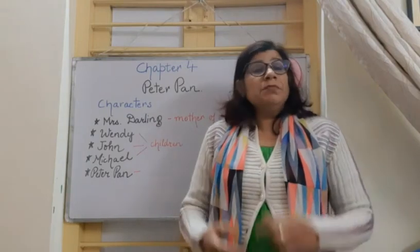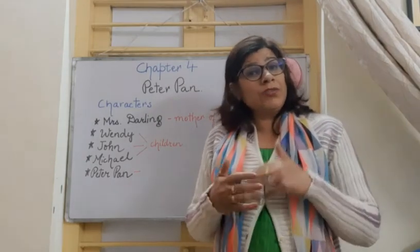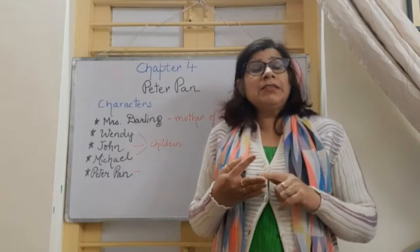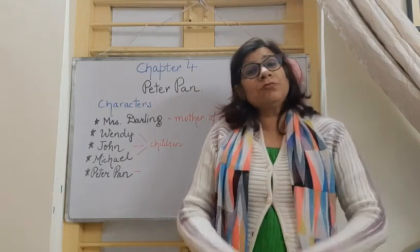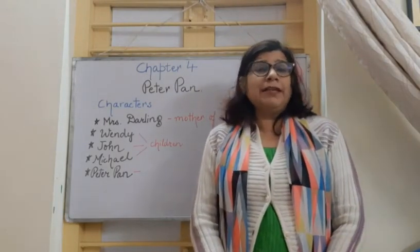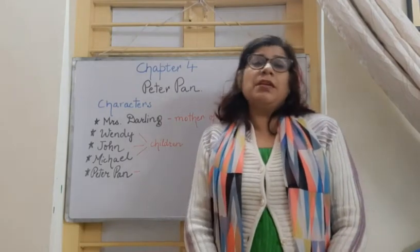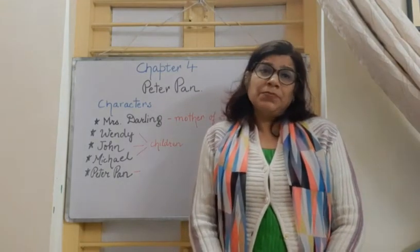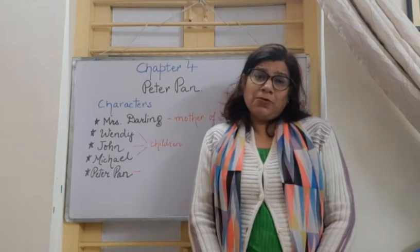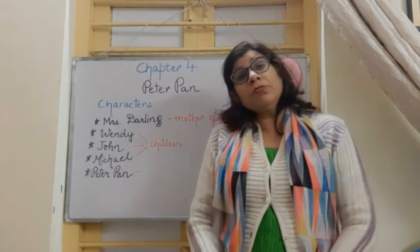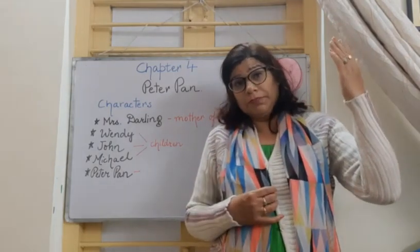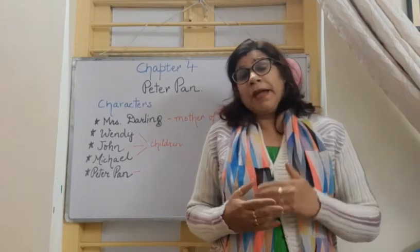Peter Pan used to often enter the nursery of Wendy, Michael, and John, who were the children of Mr. and Mrs. Darling. These three children used to often tell about a little boy entering their nursery in the middle of the night, but Mrs. Darling never believed all this.